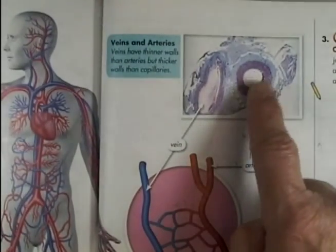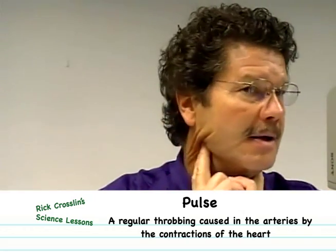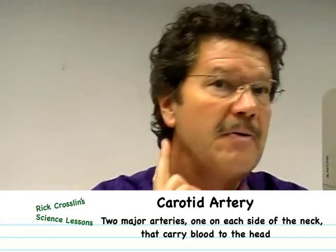The heart pushing blood out is called your pulse. You can feel it right under your jaw — there are two arteries called the carotid arteries. Put two fingers there and lean over and you can feel it. Blood gets back to your heart because every time you move and breathe you're squeezing the veins and pushing the blood back to your heart.